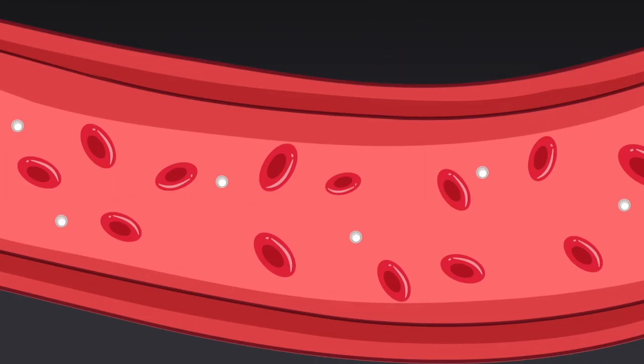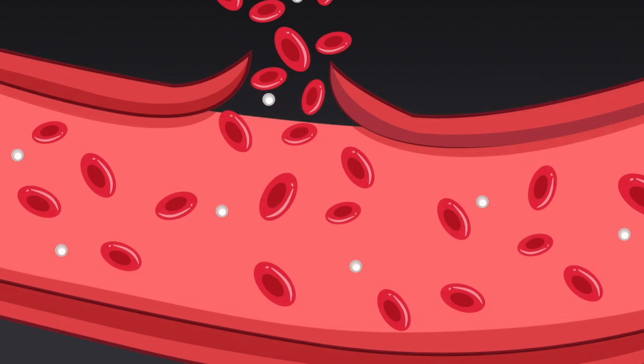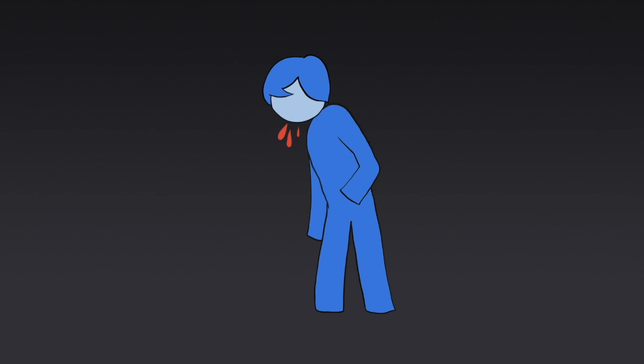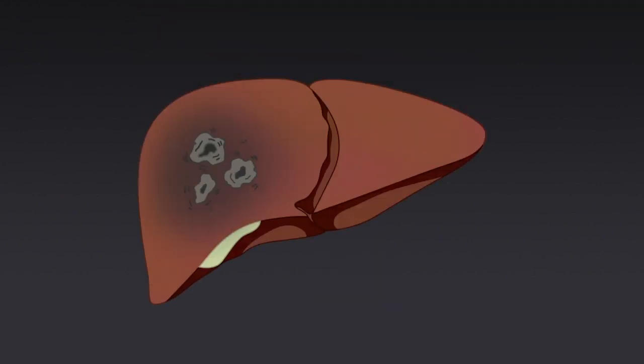The blood vessels in food pipe and stomach also dilate and may burst open leading to vomiting of blood and passing of dark blood in the stools. And lastly, liver cirrhosis also increases the chance of developing liver cancer.